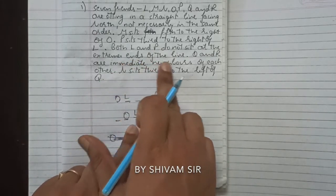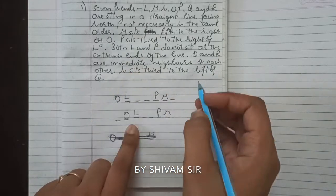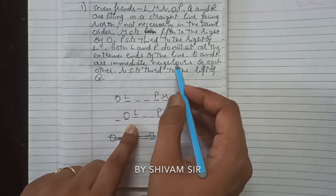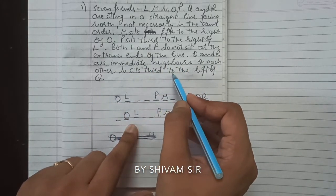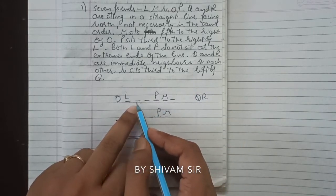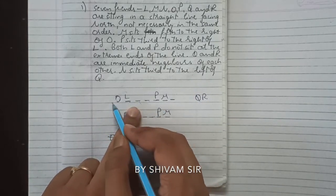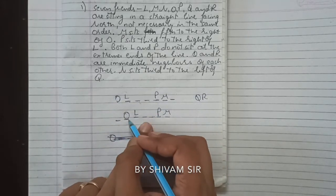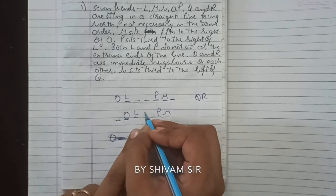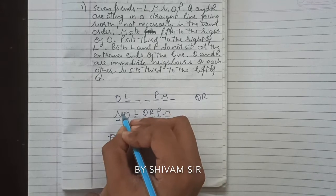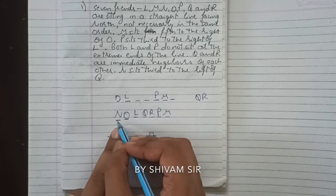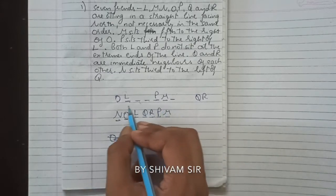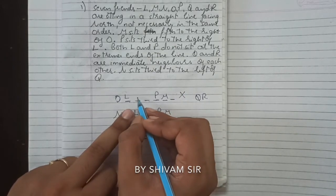Next clue: Q and R are immediate neighbors of each other. N sits third to the left of Q. If we place Q at a position where there is no third to the left, that doesn't work. Placing Q at position 5 gives us N at position 2. So the only valid arrangement becomes: N, O, L, Q, R, P, M — this is the only possibility; the other gets eliminated.